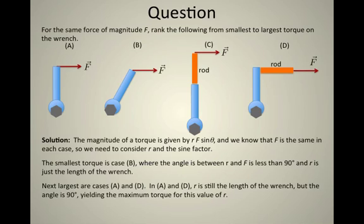The next two, which are equivalent, actually equal in magnitude, are A and D. In both A and D, the angle between the force vector and R is 90 degrees, and the distance between the pivot point and where the force is being applied is just R, the length of the wrench.